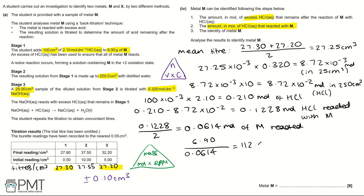Relative atomic mass of M = 6.90 ÷ 0.0614 = 112.4. Referring to the periodic table, 112.4 is the relative atomic mass of cadmium (Cd) — the identity of metal M. The six marks are awarded for: mean titer, moles of HCl in 25 cm³, moles of HCl in 250 cm³, moles of HCl reacted with M, moles of M, and identifying M as cadmium.